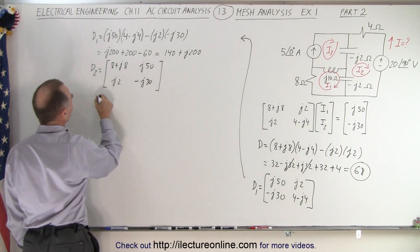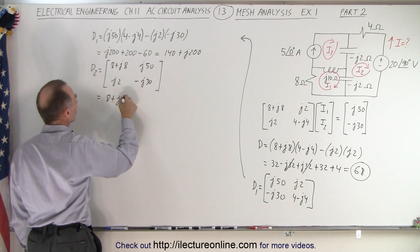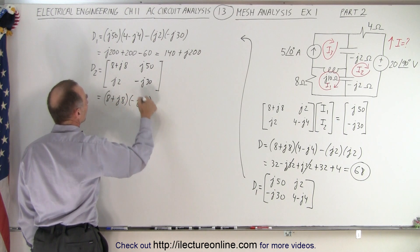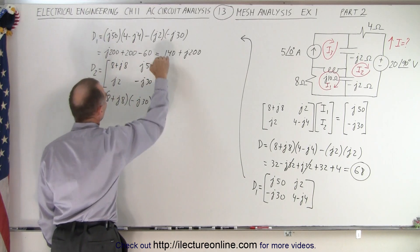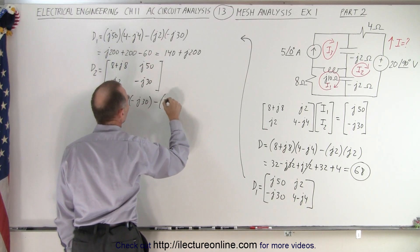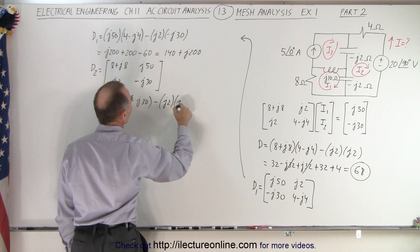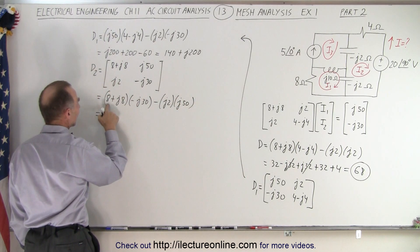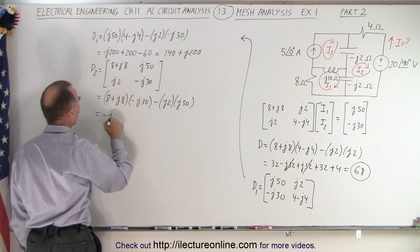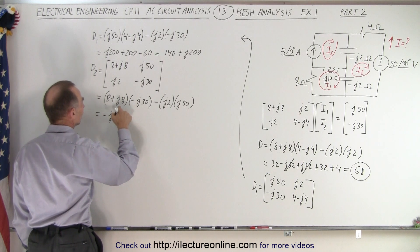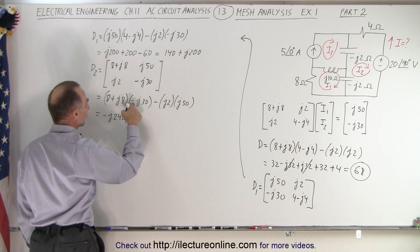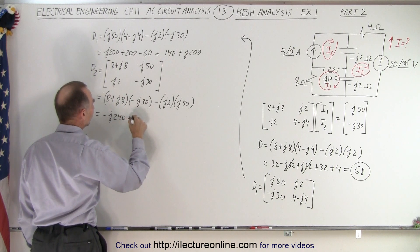So this is equal to 8 plus j8 multiplied times a minus j30. So we multiply these two terms minus the product of these two, which is j2 times j50. Alright, so this is equal to 8 times this, that gives me minus j240. This times this, j times j is a minus 1, times a minus is plus 1, times 240, so that plus 240.